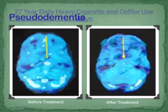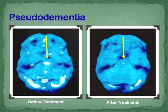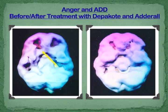Now we're going to look at some diseases. Pseudo-dementia is depression in the elderly — the limbic area lights up when you have depression. This is before treatment and then after treatment; you can see that normalize. A person with anger and ADD: before treatment you see some deficits, and after treatment with meds and therapy, a lot better filled in — about a year after treatment.